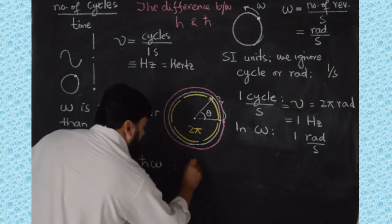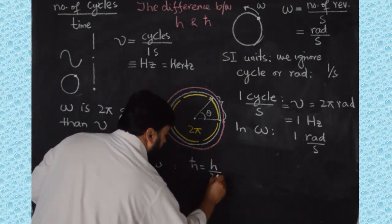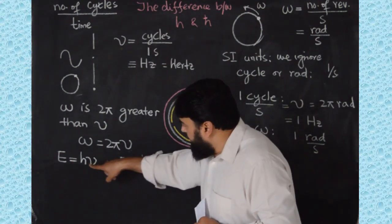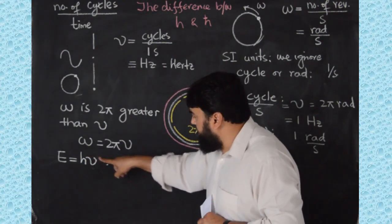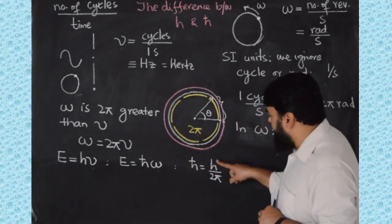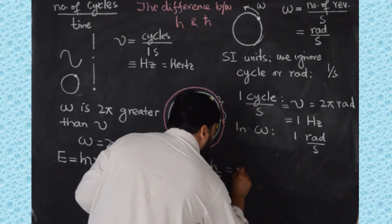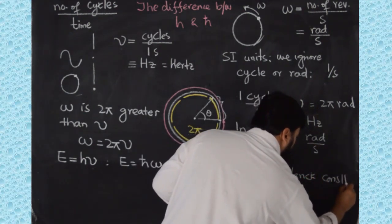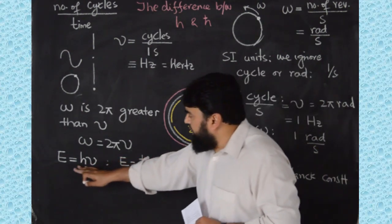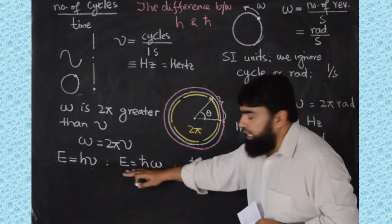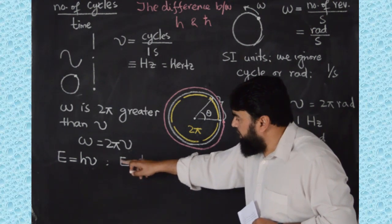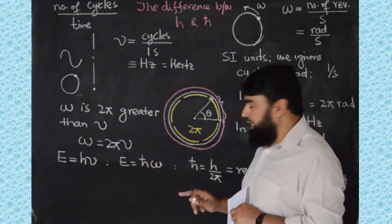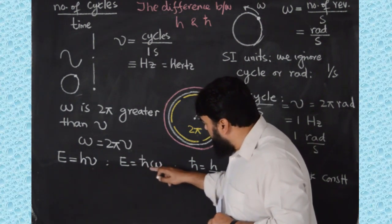Here, h-bar equals h over two pi. Because if we multiply E = h·nu by two pi and divide by two pi, then two pi·nu equals omega, and h divided by two pi is h-bar — which we call the reduced Planck constant. So h is used in linear dynamics while h-bar is used in angular dynamics. Omega belongs to angular dynamics, so h-bar is the angular dynamics terminology.